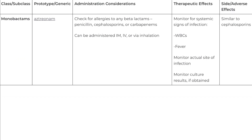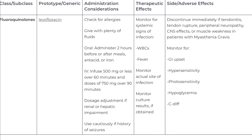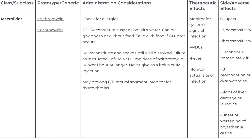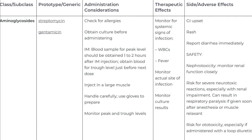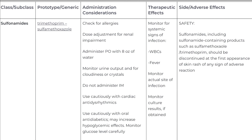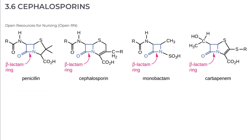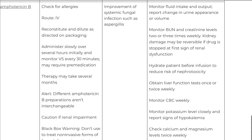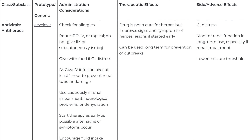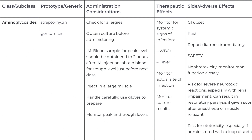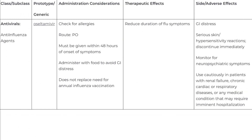Antibacterial actions: bacteriostatic versus bactericidal. When a provider selects an antibacterial drug, it is important to consider how and where the drug will ultimately target the bacteria. Antibacterial drugs can be either bacteriostatic or bactericidal in their interactions with offending bacteria. Bacteriostatic drugs cause bacteria to stop reproducing; however, they may not ultimately kill the bacteria. In contrast, bactericidal drugs kill their target bacteria. The decision about whether to use a bacteriostatic or bactericidal drug often depends on the type of infection and the overall immune status of the patient.